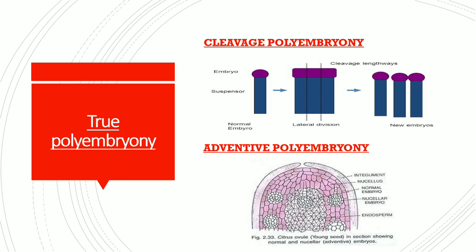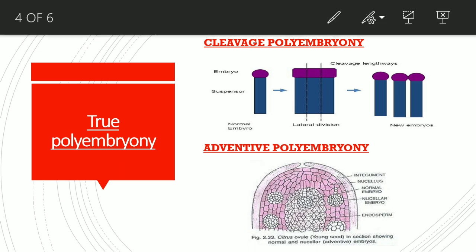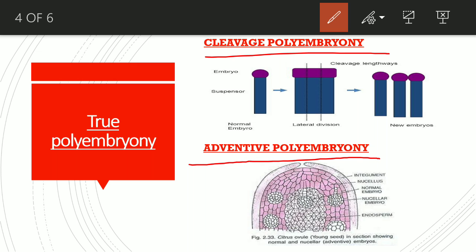True polyembryony may be subdivided into two types: the first one is cleavage polyembryony and the second one is adventive polyembryony.